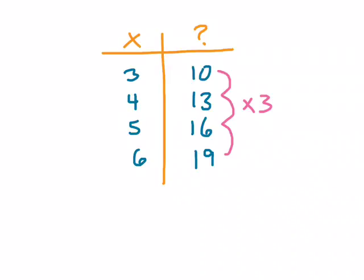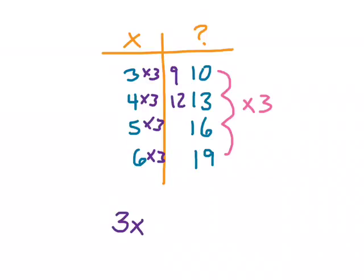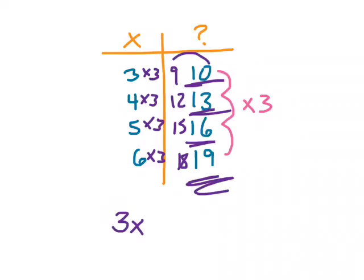I think I'm taking x and multiplying it by three, so I'll say three x. Now, three x by itself doesn't fully account for the output, because three times three, four times three, five times three, six times three, seven times three gives me nine, twelve, fifteen, eighteen — which doesn't quite match the numbers I'm trying to get. But from here I can see a quick easy pattern: from nine to ten, twelve to thirteen, fifteen to sixteen, eighteen to nineteen — that's an increase of one. So plus one is the rest of the expression: three x plus one.